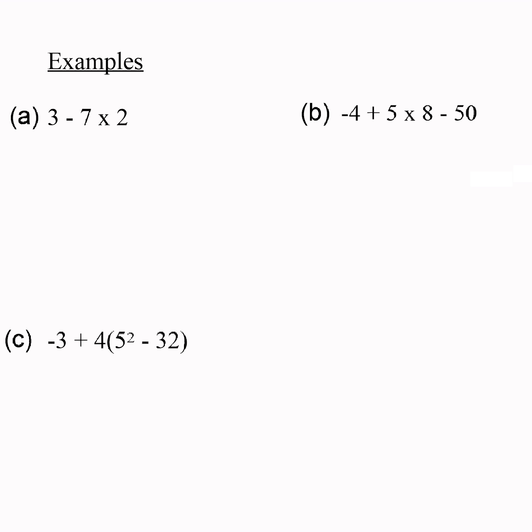Let's look at some examples. For example, here is the first one here. We do our multiplication first. We do 3 minus 7 times 2, which is 14. And 3 minus 14 is negative 11.